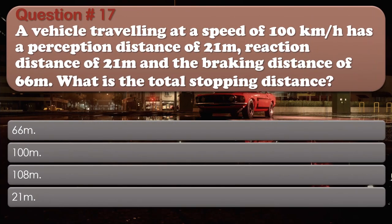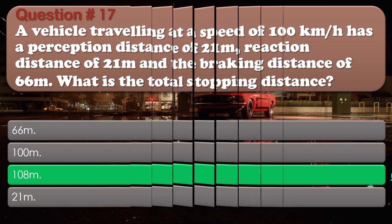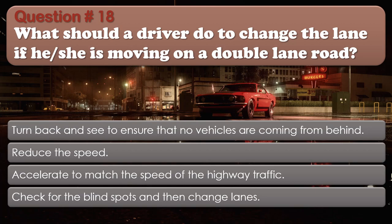Question number 17. A vehicle traveling at a speed of 100 km per hour has a perception distance of 21 meters, a reaction distance of 21 meters, and a braking distance of 66 meters. What is the total stopping distance?